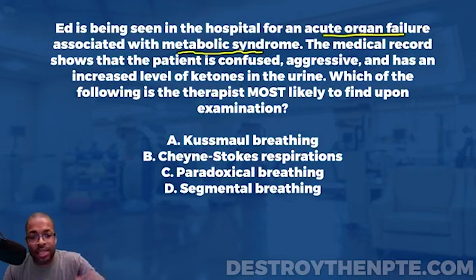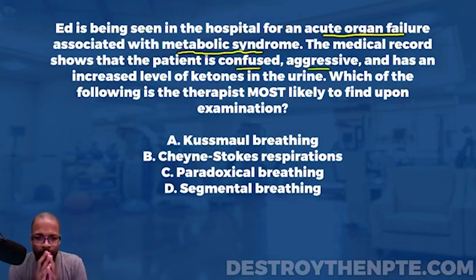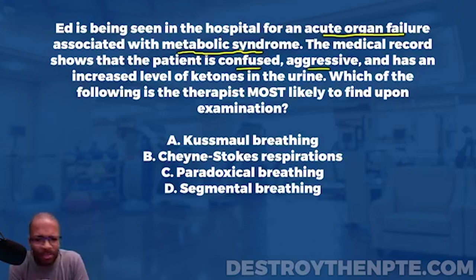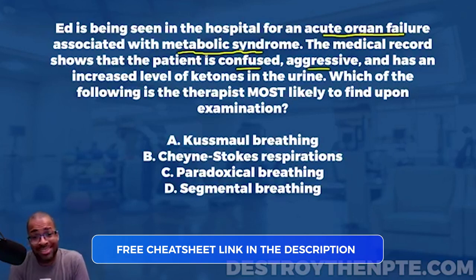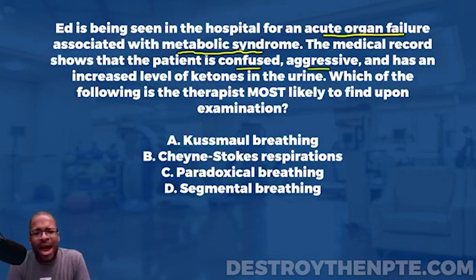The medical record shows the patient is confused and aggressive. Before moving on, let's stop on that. A patient who is confused tends to get aggressive — they don't know where they are, what you're doing, or what's going on. This happens a lot in the ICU with delirium. So I'm not giving 'aggressive' that much weight; it goes along with the confused state.